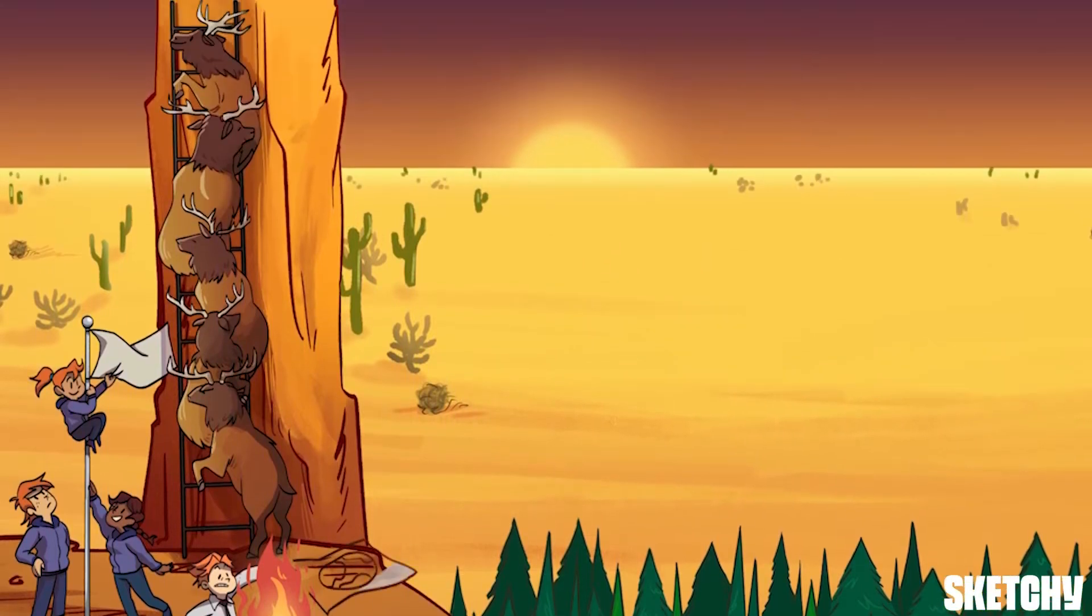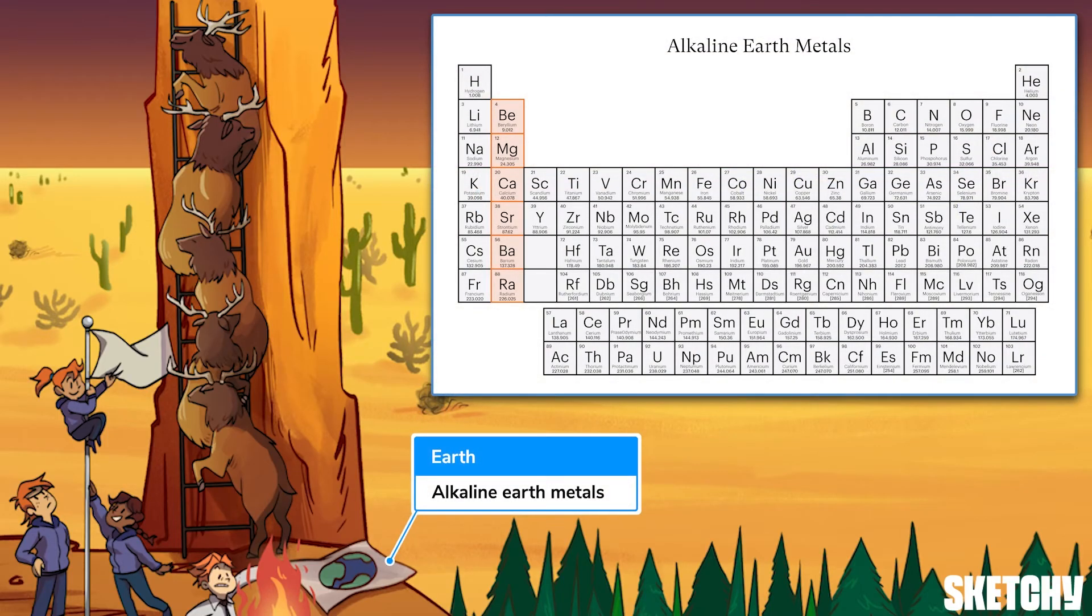Anyways, while we're playing with fire, group 2 of the periodic table is also fairly reactive. So we're going to stay right by Mr. Dalton's little explosion. That map of the earth right next to the elk line should remind you that these elements are called alkaline earth metals. And while these are reactive, keep in mind that they're not quite as reactive as the plain old alkali metals.